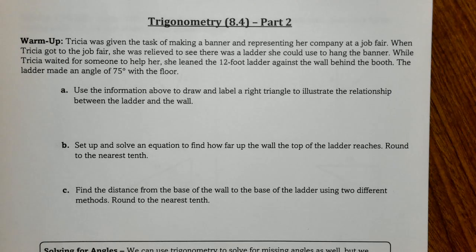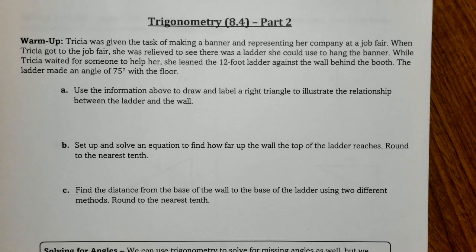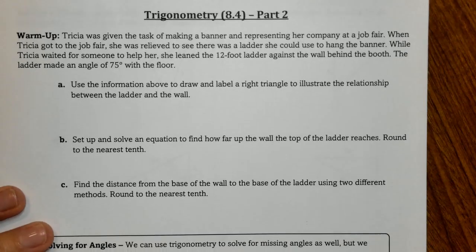For our warm-up: Tricia was given a task of making a banner and representing her company at a job fair. When Tricia got to the job fair, she was relieved to see there was a ladder she could use to hang the banner. While she waited for someone to help her, she leaned a 12-foot ladder against a wall behind the booth. The ladder made an angle of 75 degrees to the floor. We're going to use this information to draw and label a right triangle to illustrate what's going on with the ladder and the wall.